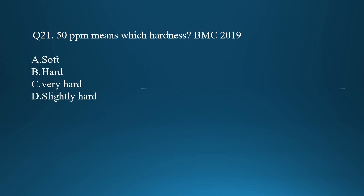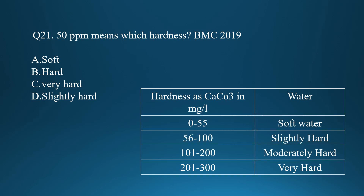The water hardness chart: 0–55 mg/L is soft water; 56–100 is slightly hard; 101–200 is moderately hard; 201–300 is very hard water. This is a very important chart to remember. For 50 ppm, the answer is soft water. Option A is correct.